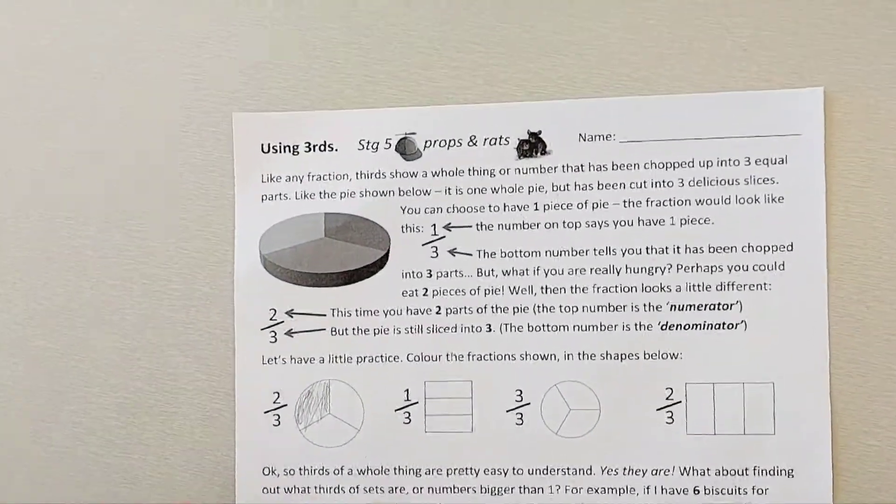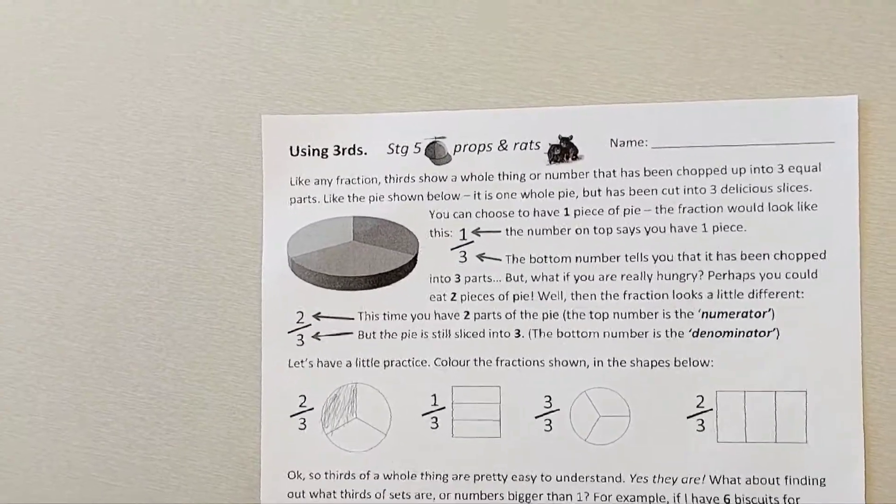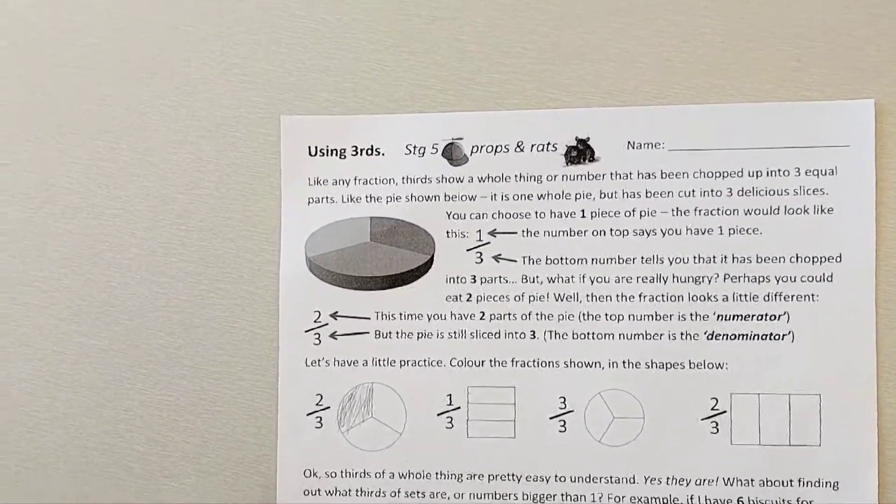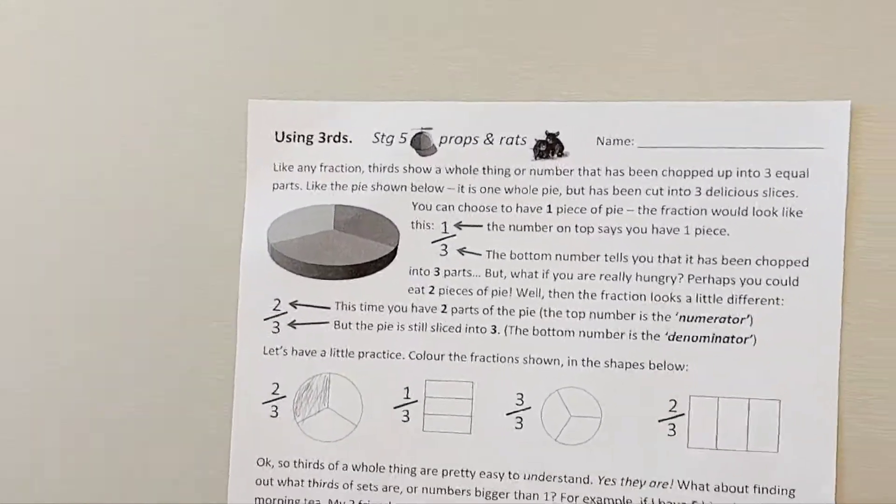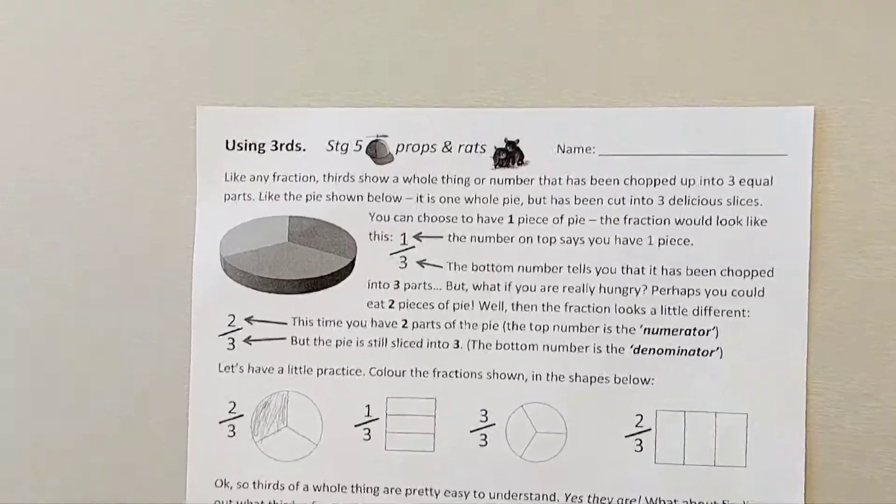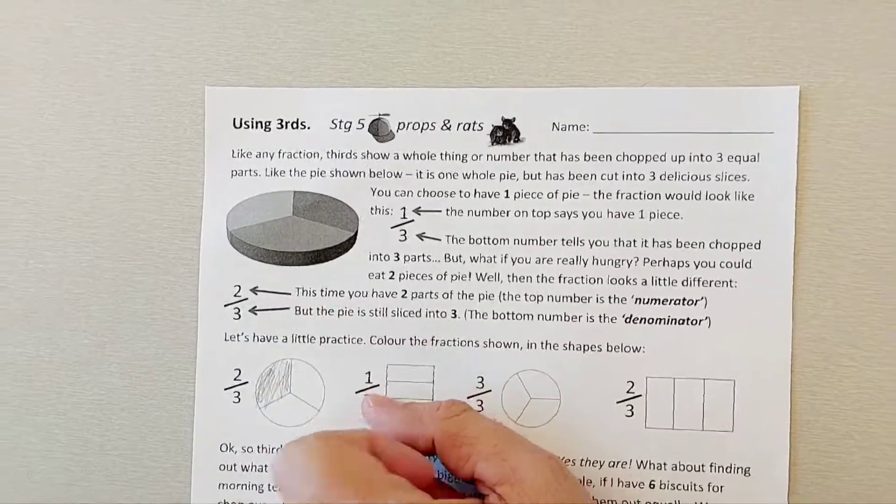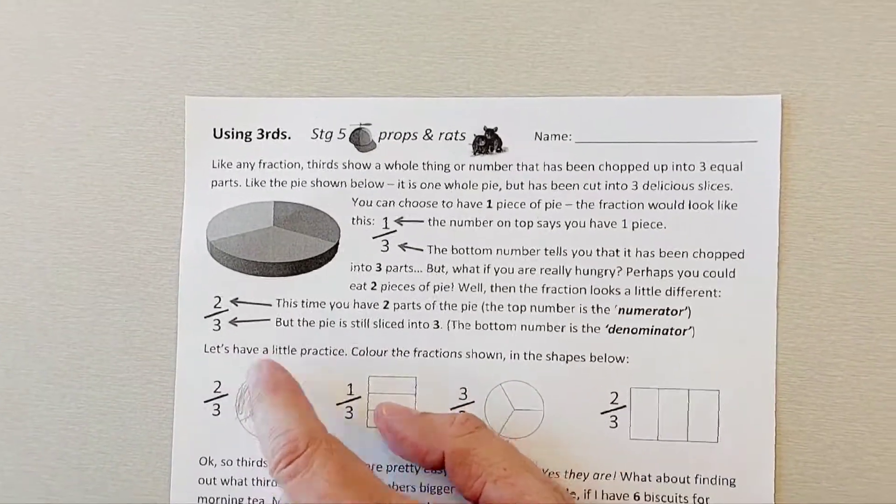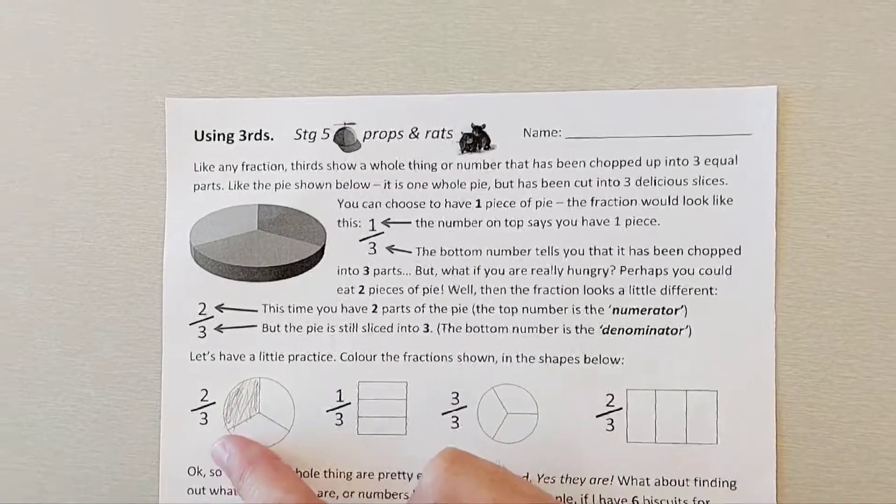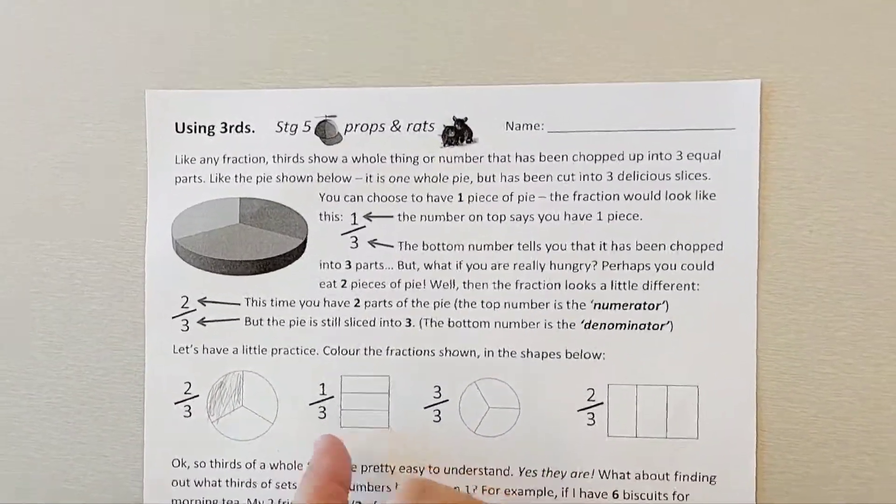But what if you're really hungry? Perhaps you could eat two pieces of pie. Well then the fraction looks a little bit different. This time you have two parts of the pie, the top number is the numerator, and the pie is still chopped into three parts so the bottom number doesn't change.